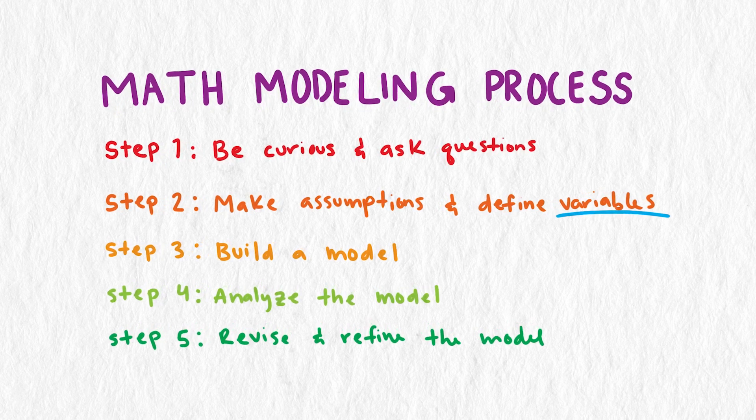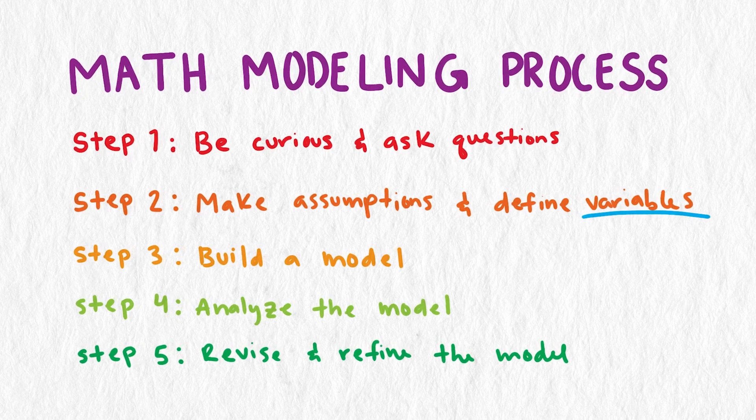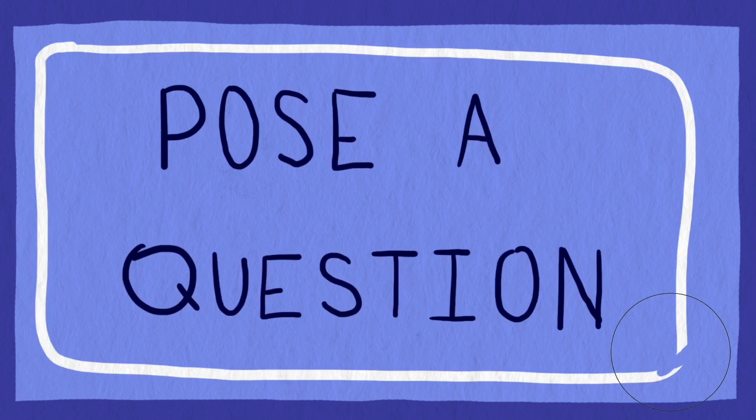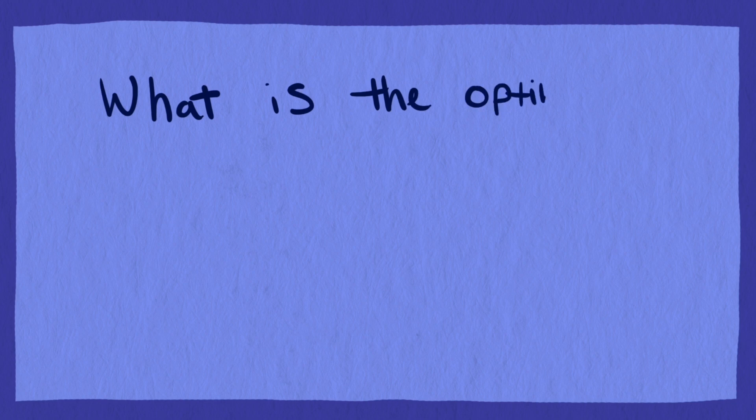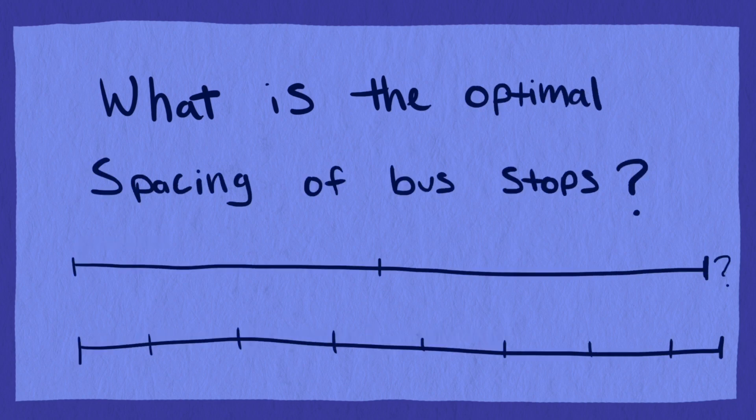These five steps are the way we have described the process of mathematical modeling, a process for solving real-world math problems that are more complex than straightforward computation. The first step is to pose a question. For this video we're trying to find the optimal spacing of bus stops, at least the optimal spacing for bus stops along the path I drive to work. But the model we come up with could be adapted to other situations.